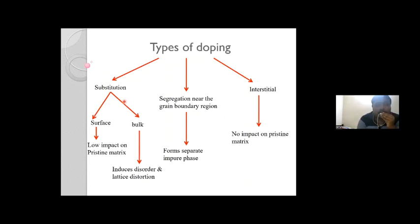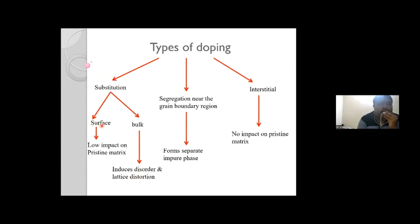The wide range of doping types includes substitution and interstitial. We also observe segregation near the grain-boundary region in a polycrystalline matrix. Within substitution, if ions enter the bulk of the lattice, they significantly induce lattice disorders or distortion. If the dopant's penetration ability is very low, it enters the surface, resulting in surface doping.